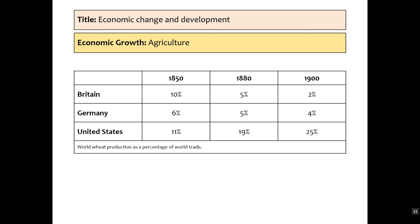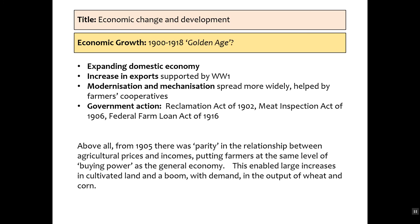One area where we could say there was significant growth — and might even call it a golden age — is agriculture. A chart showing world wheat production as a percentage of world trade reveals that America really starts to dominate by 1900, and this is further increased by the effects of World War I. Germany and Britain's production falls as they move to a different kind of economy. We might call it a golden age because agricultural output increases significantly between 1900 and 1918, partly due to WWI exports but also the expanding domestic economy. New urban cities created larger markets for produce and easier distribution. Modernisation and mechanisation helped farmers' cooperatives, and there was government action: the Reclamation Act of 1902, the Meat Inspection Act of 1906, and the Federal Farm Loans Act of 1916. Above all, agricultural success in this period can be called a golden age.